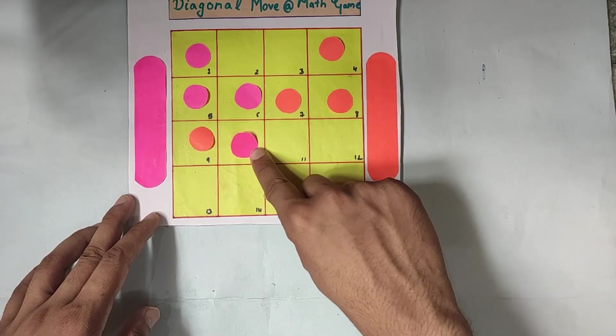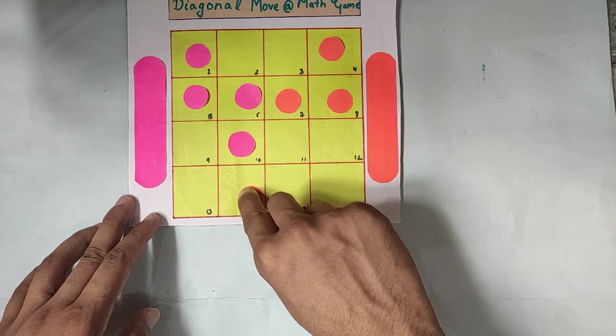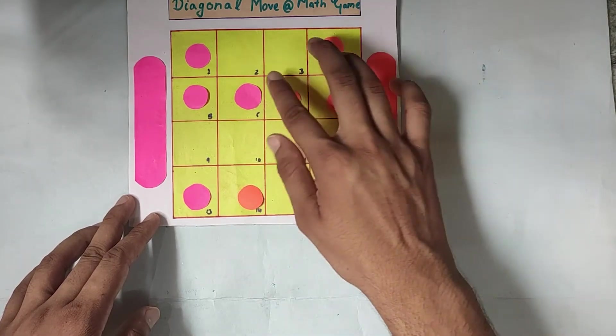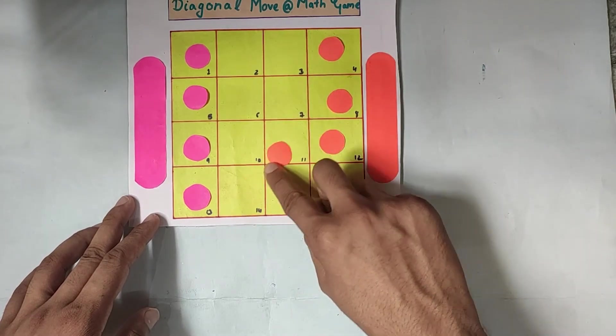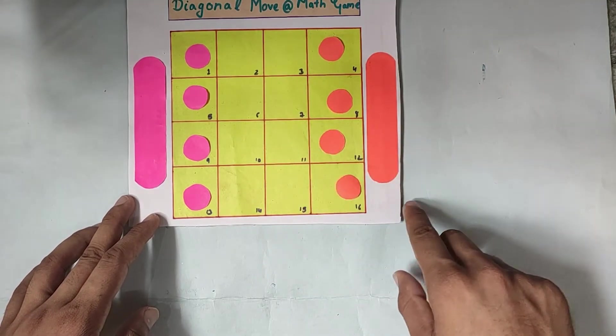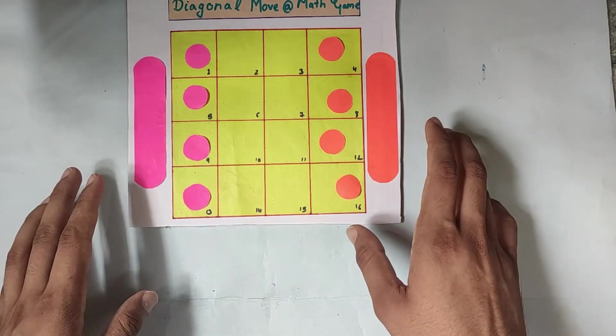We will continue till when it goes the like the steps. Fourteen are over. Now, fifteen, sixteen, seventeen, eighteen, nineteen, twenty and twenty-one. So, the game is completed in twenty-one steps, but that is not our aim.